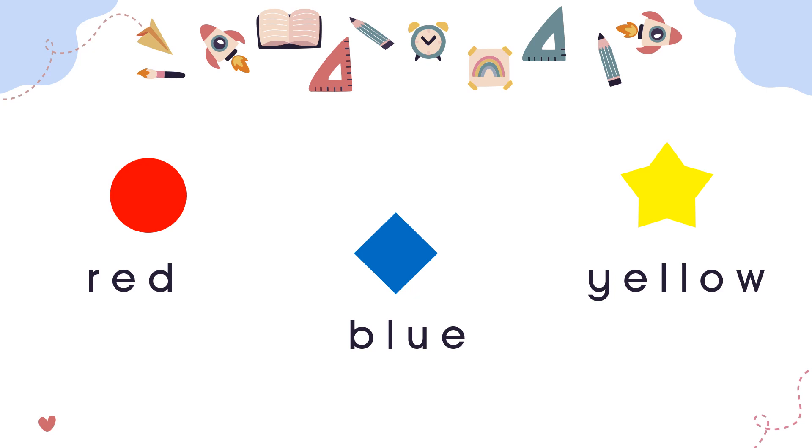Let's spell together. Red: R, E, D. Red. Blue: B, L, U, E. Blue. Yellow: Y, E, L, L, O, W. Yellow.